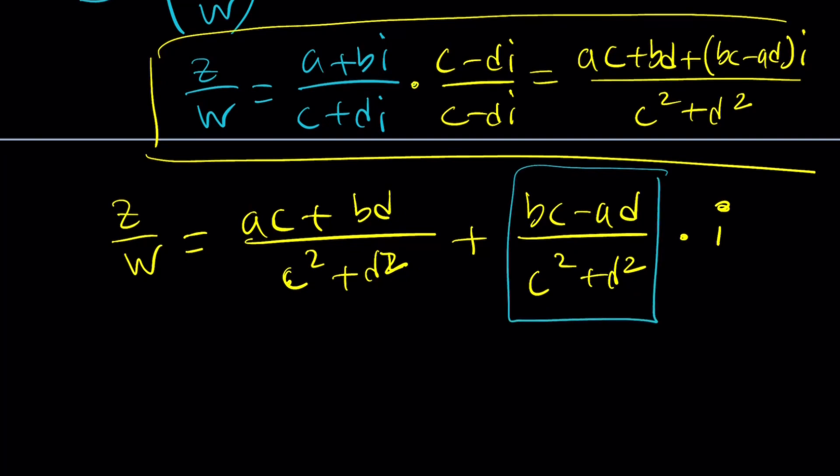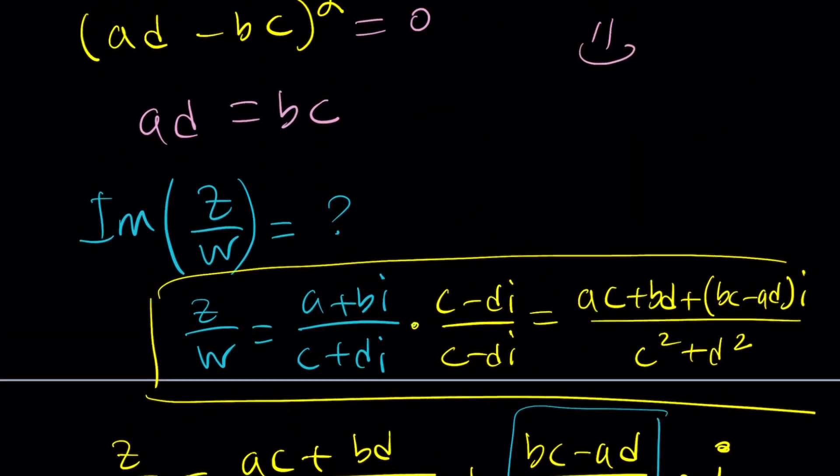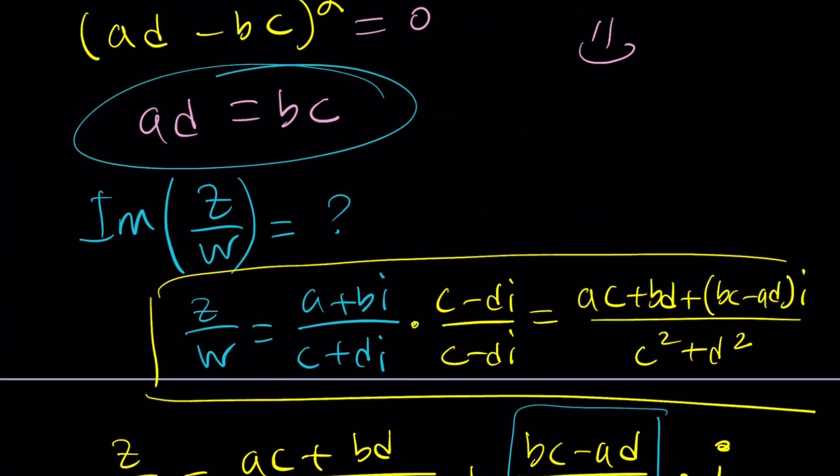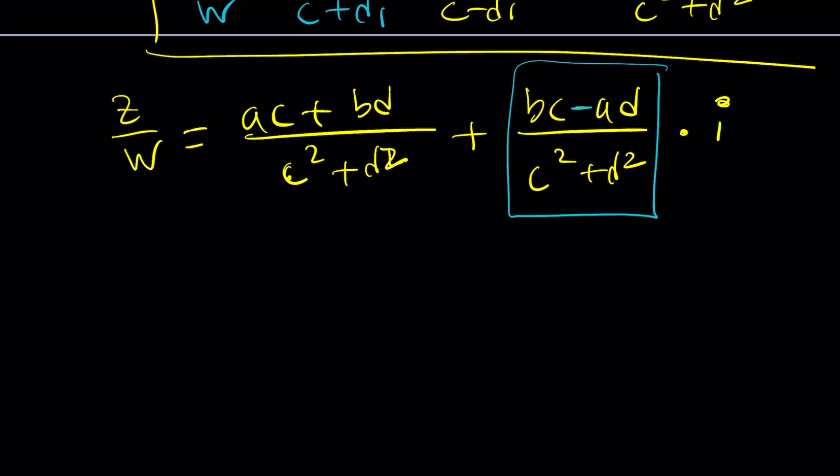But what is that equal to? Well, actually, I do. Because BC is equal to AD. So BC minus AD is equal to 0. You get it?